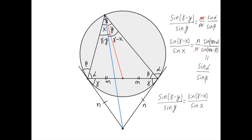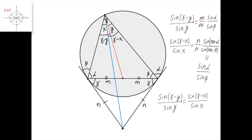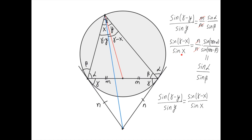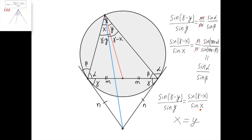We can cancel out the m's and the n's. Notice that sin of (180 minus alpha) equals sin of alpha, and sin of (180 minus beta) equals sin of beta. Therefore, sin of (gamma minus x) over sin of x equals sin of alpha over sin of beta, which equals sin of (gamma minus y) over sin of y. From this equality, we can conclude that cotangent of x equals cotangent of y, and since x and y are between 0 and 180 degrees, then x equals y.